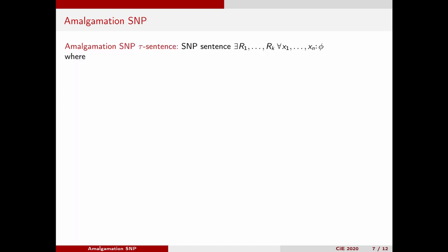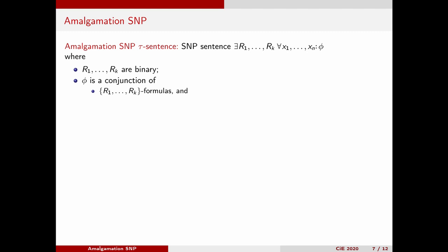We can finally define amalgamation SNP. An amalgamation SNP sentence is an SNP sentence where the input signature tau is still arbitrary, but where the existentially quantified relation symbols are all binary, and where each conjunct of the first-order part is of one of two possible forms: either it is a quantifier-free formula that only uses the existentially quantified relation symbols, or it is an implication where on the left we have an input relation symbol from tau and on the right a quantifier-free formula that only uses the existentially quantified relation symbols. Finally, we require that the class of structures in the signature of the existentially quantified relation symbols that can be expanded to models of the first-order part forms an amalgamation class.